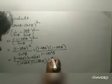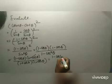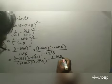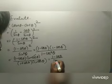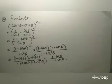Finally, the (1 - cos θ) factors cancel, giving the answer (1 - cos θ)/(1 + cos θ).